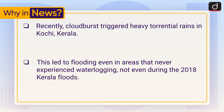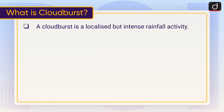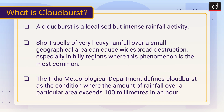This led to flooding even in areas that never experienced waterlogging, not even during the 2018 Kerala floods. Now let's discuss what is a cloudburst. A cloudburst is a localized but intense rainfall activity — short spells of very heavy rainfall over a small geographical area. The India Meteorological Department defines cloudburst as a condition where rainfall over a particular area exceeds 100 millimeters in an hour.